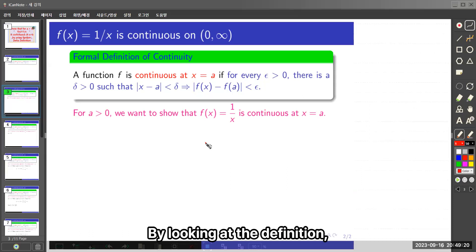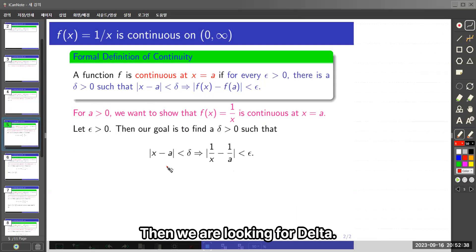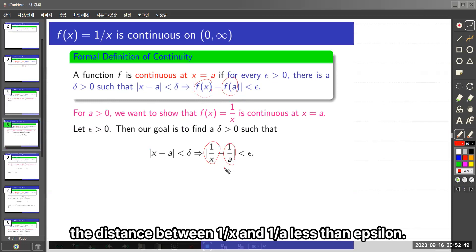By looking at the definition, we should consider positive epsilon first. Then we are looking for delta. We want, by replacing f(x) with 1/x and f(a) with 1/a, the distance between 1/x minus 1/a less than epsilon.